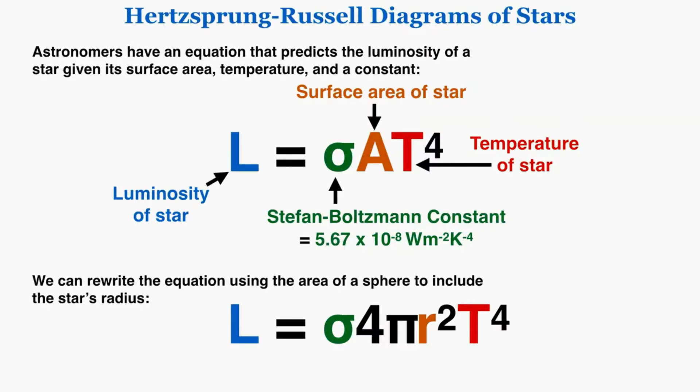Astronomers have an equation that predicts the luminosity of a star given its surface area, temperature, and a constant. There's one new constant that we haven't worked with before, the Stefan-Boltzmann constant, which is 5.67 times 10 to the negative 8 watts per meter squared per Kelvin to the negative 4th.